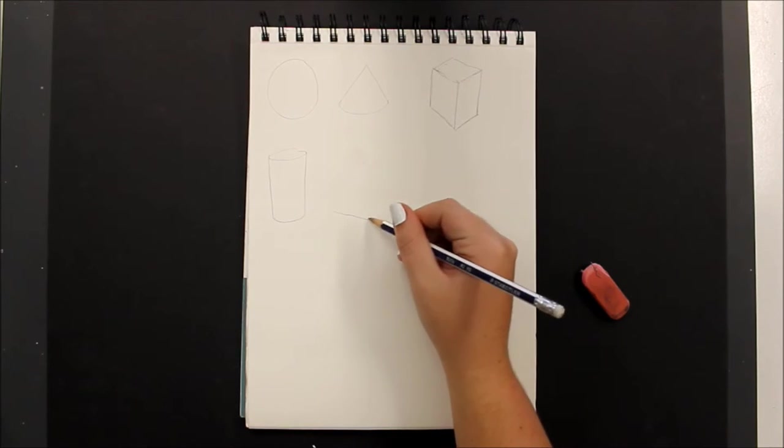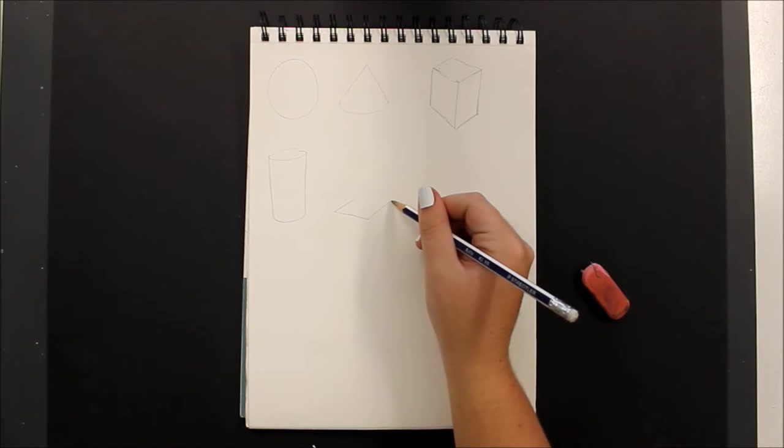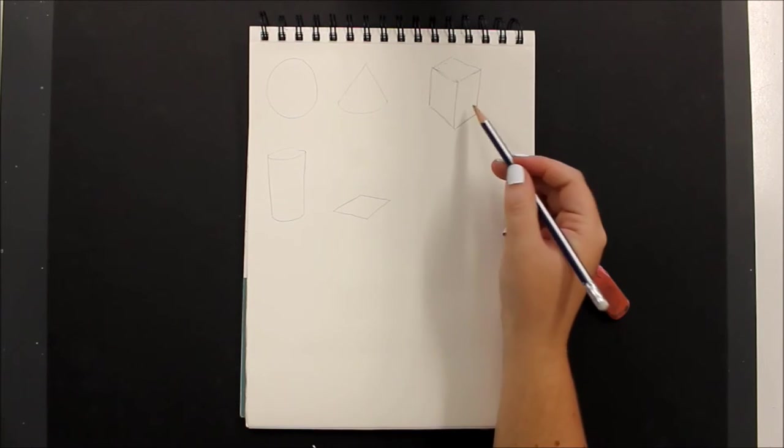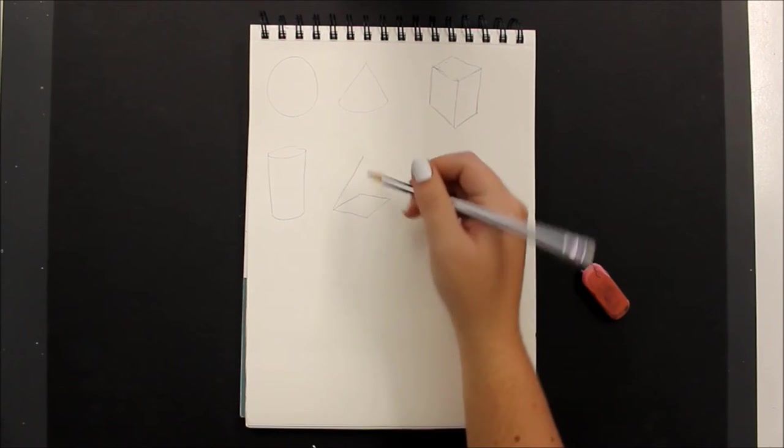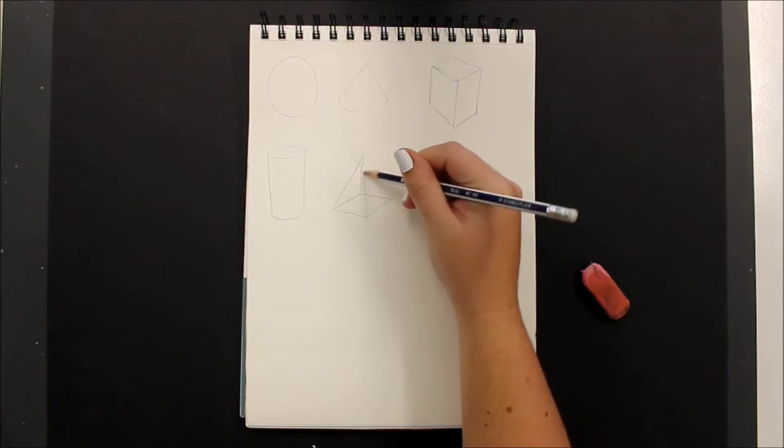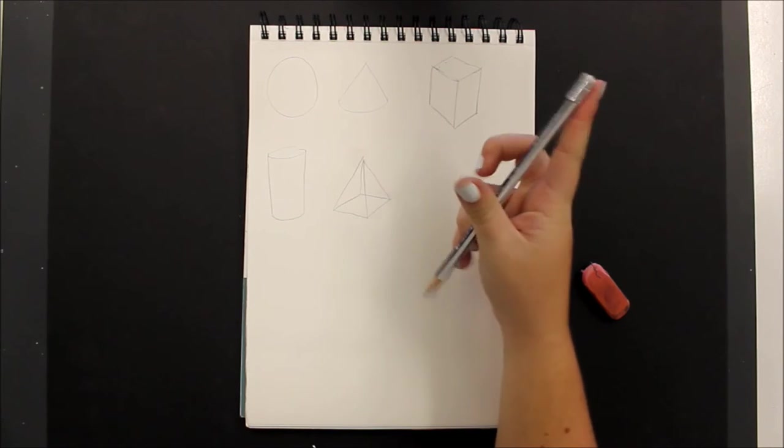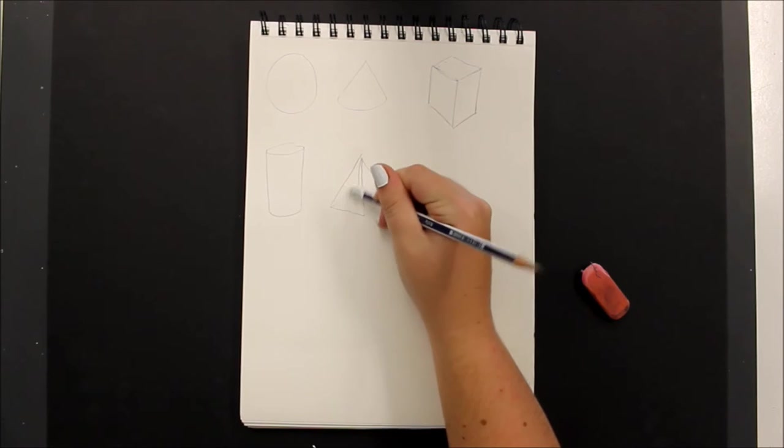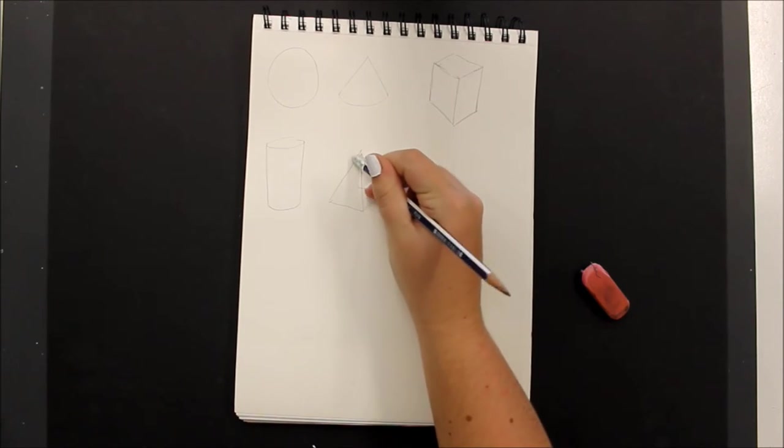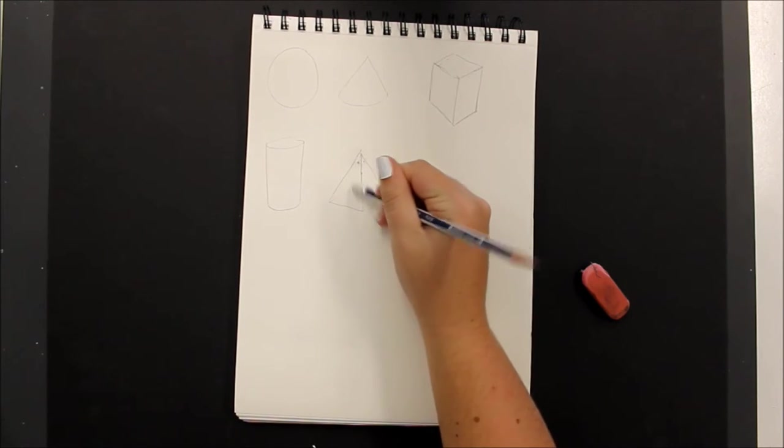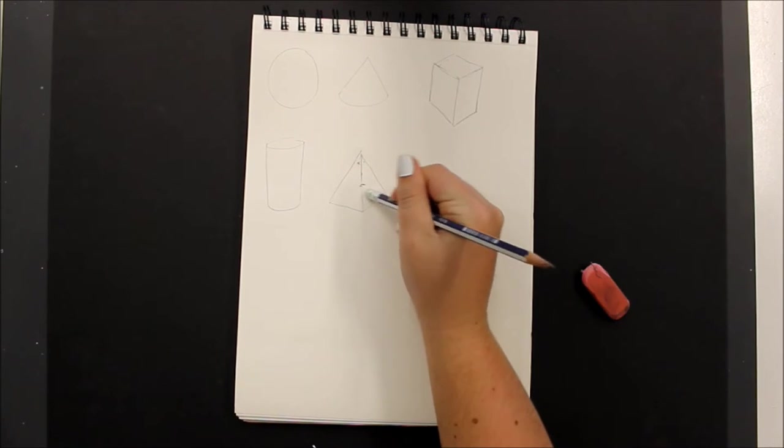A pyramid, same thing as your cube, and if you would like to erase the lines that you see in the back, you may. You'll probably find it a lot easier to shade in if you pretend that your object is solid.